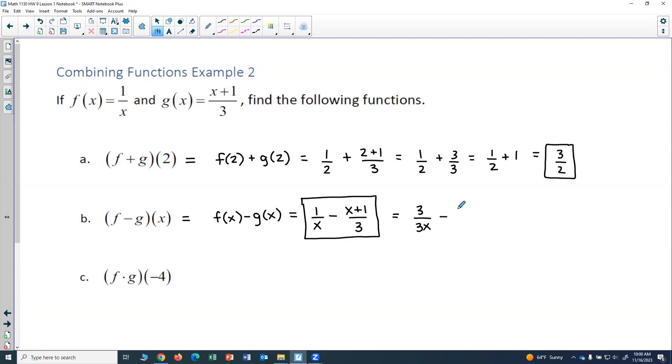And I could write the second one as x times x plus 1 over 3x. So notice, again, if I canceled out the x's, I would just end up with my x plus 1 over 3. But now my two fractions have the same denominator, so I can go ahead and combine.